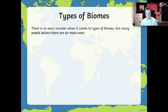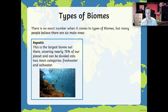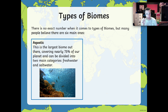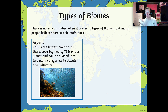So, six main groups. The first one is an aquatic biome. An aquatic biome quite simply is the sea and the oceans — aquatic means water. This is the largest biome of them all because it covers nearly 75% of our planet. It can be divided into two main categories: fresh water and salt water. Salt water is what most of the seas and oceans are, while fresh water would be your areas like lakes.